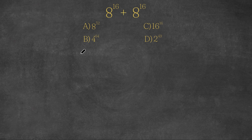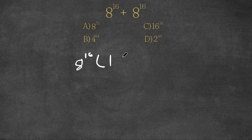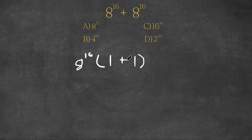So let's first start by factoring out 8 to the power of 16. So now we have 8 to the power of 16 times 8 to the power of 16 divided by 8 to the power of 16, which is 1, plus 8 to the power of 16 divided by 8 to the power of 16, which is also 1.